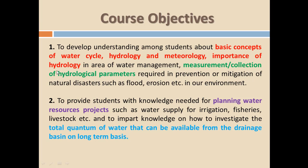The second objective of this course is to provide students with the knowledge needed for planning water resources projects such as water supply for irrigation, drainage, fisheries, and livestock. It also aims to impart knowledge on how to investigate the total quantity of water available from a drainage basin on a long-term basis.